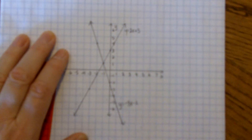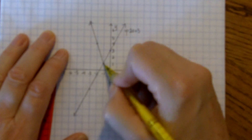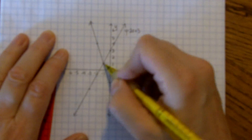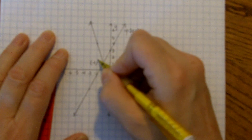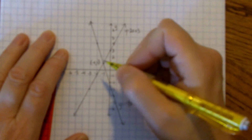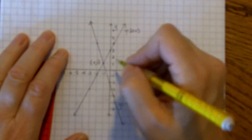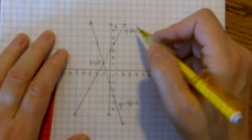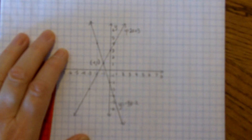And finally, what we were looking for was the intersection point of these two lines, so I'll also label that. And that's all there is to graphing two lines and finding their intersection point.